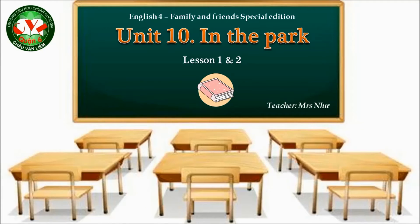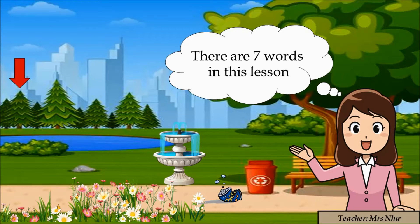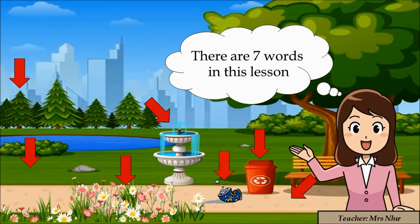Unit 10: In the park. Lesson 1 and Lesson 2. The park is my favorite place to go at the weekend. In the park, there are many things to see and do. In the lesson today, you will learn 7 new words: trees, grass, flowers, path, garbage can, fountain, and litter. Now let's start with the words one by one.